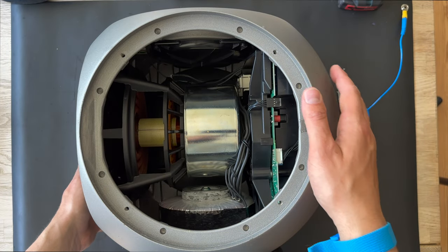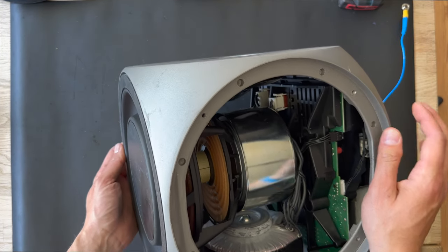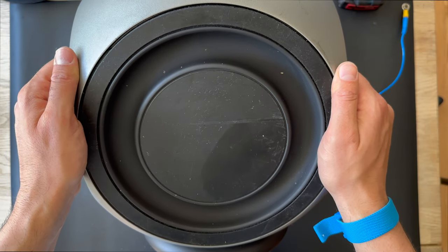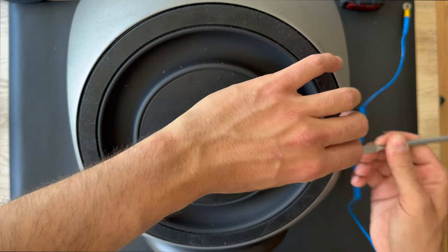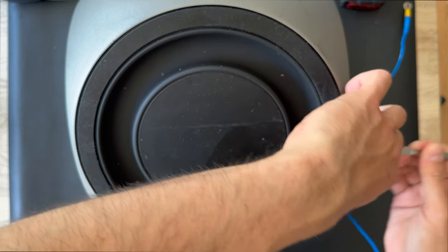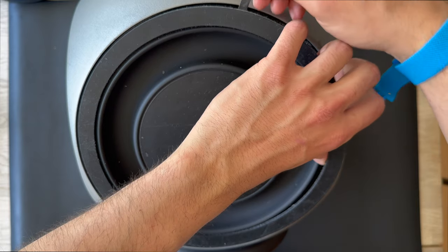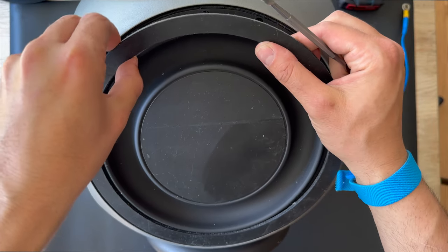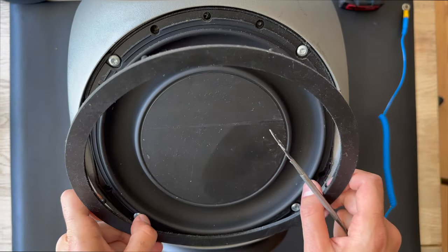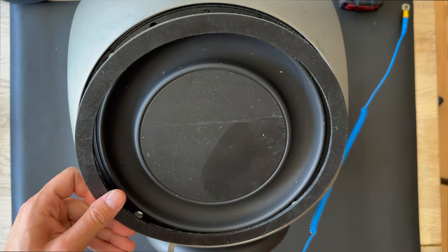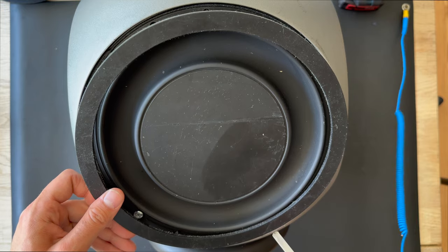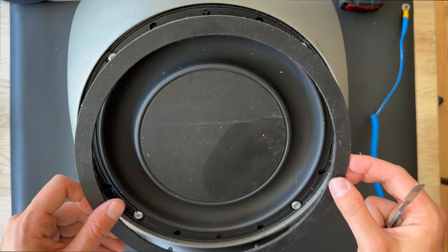The next step will be removing the big bass unit. To remove the bass unit, it's the same method. We need to remove the bezel around the bass unit. Just remove it. Take your time. Don't break the small pins. Take your time. And here we go.